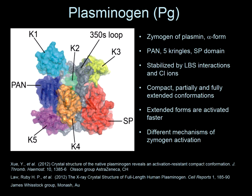The extended forms of the zymogen are activated much faster by TPA, UPA, and streptokinase. The proteases and SK activate plasminogen by different mechanisms. Before talking about SK, I want to refresh your memory of the classical mechanism of proteolytic zymogen activation.